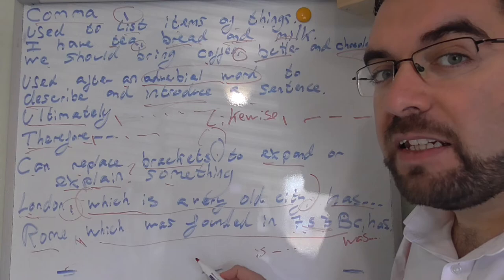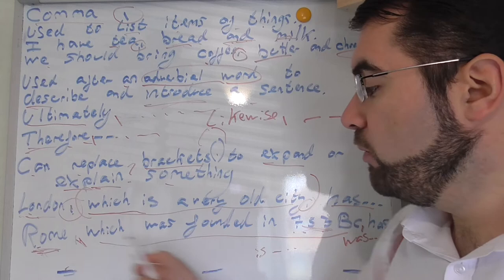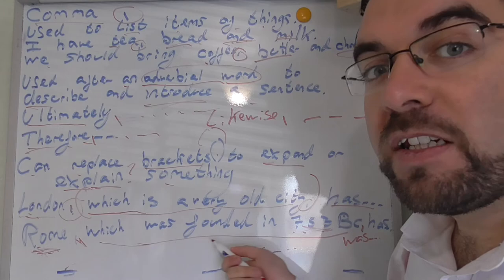So by using a comma, we can introduce a sentence that explains or expands something, then another comma to close that sentence, and then continue with the point we're making. Rome is the oldest city in Italy. Rome, which was founded in 753 BC, is the oldest city in Italy. Makes sense?